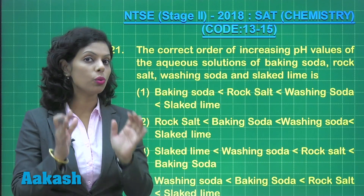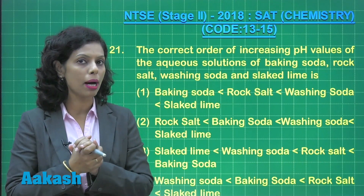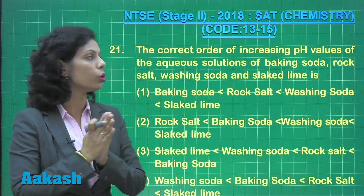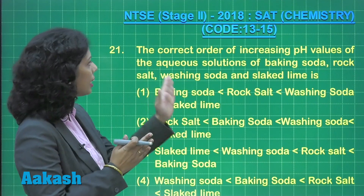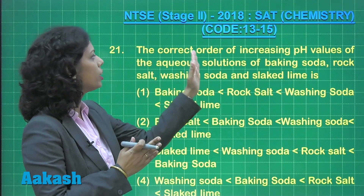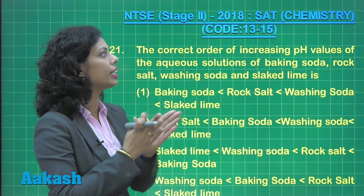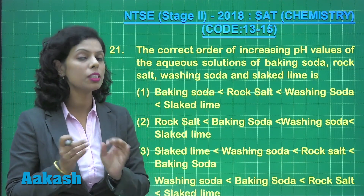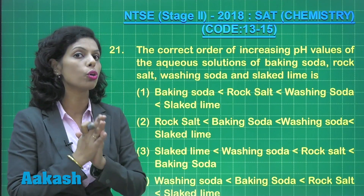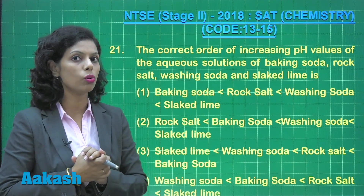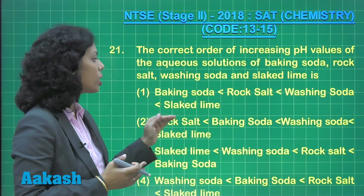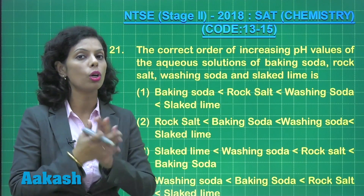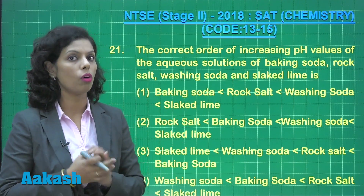You have four compounds and you have to arrange them in the order of increasing pH value. To solve this, you should know the pH value of each compound, which can be determined on the basis of hydrolysis.